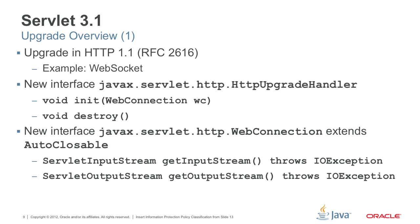First, we define a handler to handle the upgrade process. We define HttpUpgradeHandler, and this interface has only two methods. One is init, where we pass in a WebConnection as an argument, allowing you to initialize the corresponding input stream and output stream so you can do the upgrade processing. The second API is destroy, which is called to clean up the HttpUpgradeHandler and gives you a chance to clean up any resources. The WebConnection is an auto-closeable object providing two APIs: getInputStream and getOutputStream, allowing you to do the appropriate I/O operations. You can also register a ReadListener on the input stream if you want.